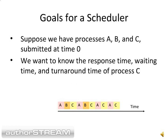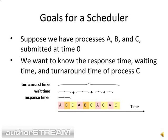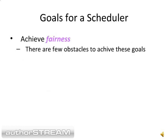For process C, the response time is the time taken by processes A and B before C was executing for the first time. The wait time, as you are seeing on the screen, and the turnaround time is the highest among all three processes.